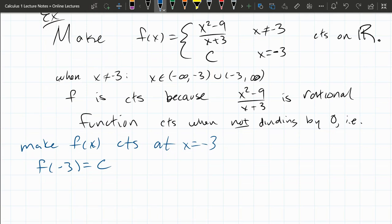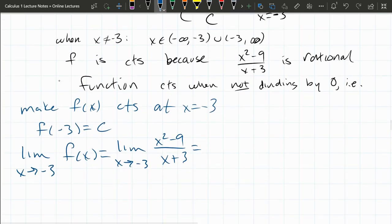Now, this needs to equal the limit. So let's take the limit as x approaches negative 3 of f(x). So here's our function. We can now factor the numerator, x squared minus 9.